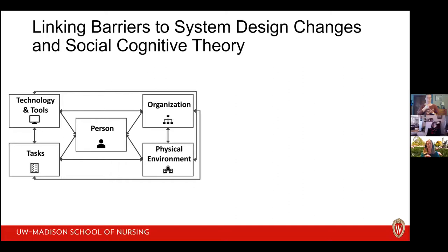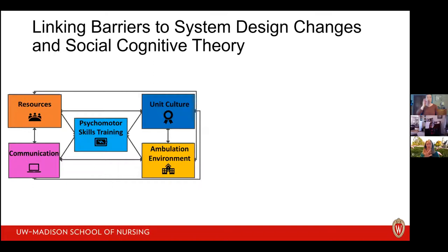This whole-systems perspective helped us think about where to intervene with a multi-component intervention. We needed to hit all pieces of the work system structure. We came up with five components that overlay on the work system structure: adding resources, specific communication tasks and tools, an enhanced ambulation environment, unit culture change, and psychomotor skills training that addresses the nurse at the center of the model.